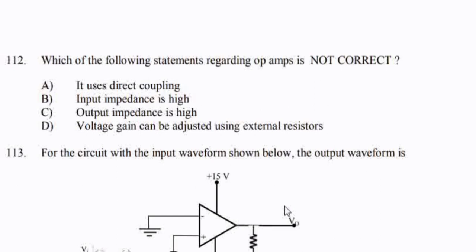Which of the following statements regarding an op-amp is not correct? Option C: output impedance is high.